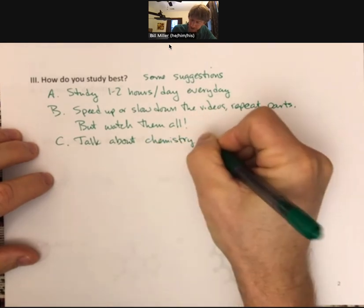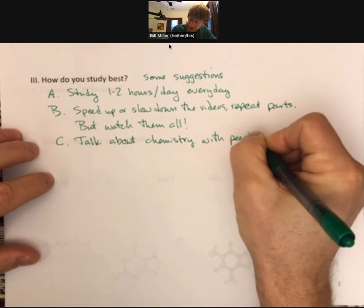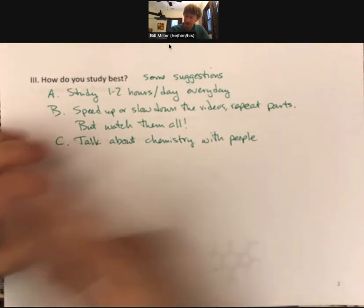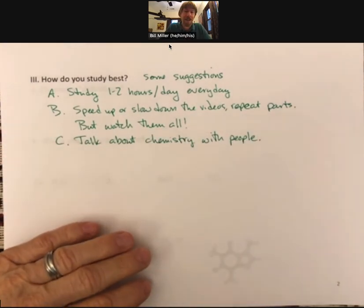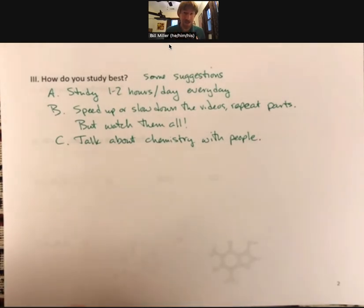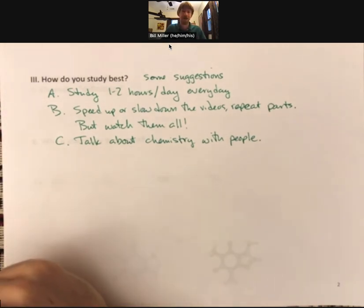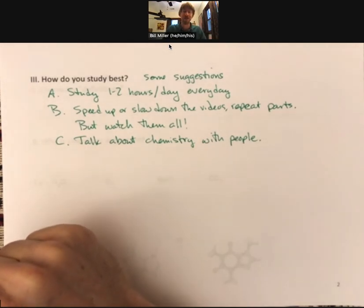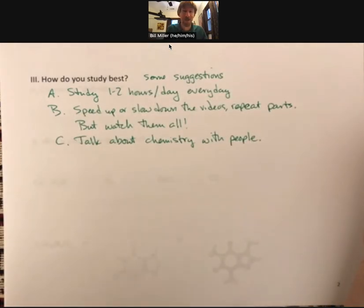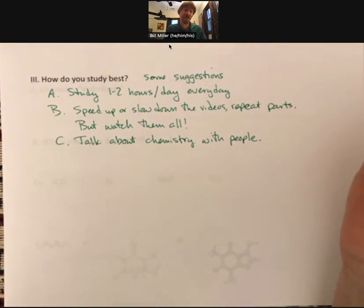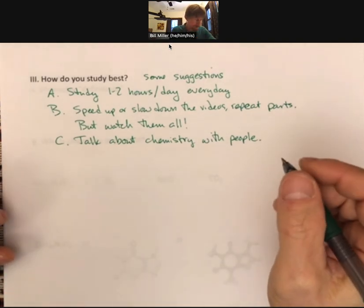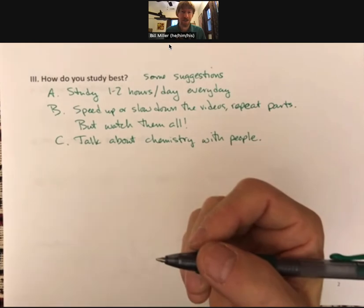Study method C: talk about chemistry with people. These can be your classmates, family members, or anybody really — and please, come talk to me during office hours. I've seen so many students figure things out just by talking about chemistry. Talk yourself through it. Also, consider joining a study group — check the syllabus for details on how to join one, and study groups can get you extra credit.